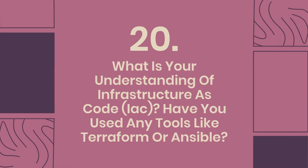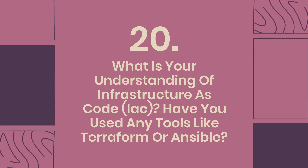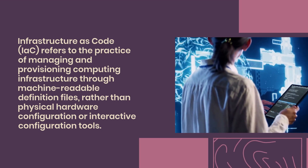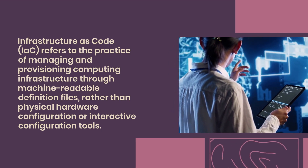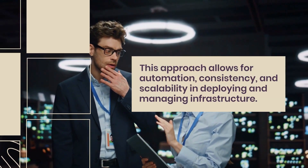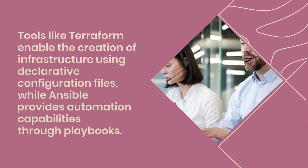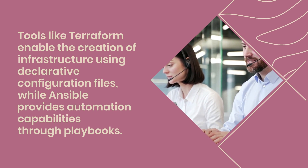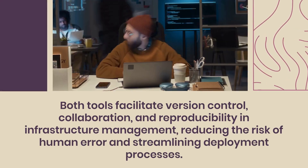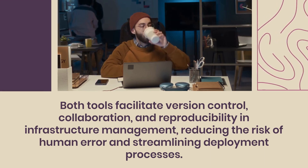Question 20: What is your understanding of Infrastructure as Code, IaC? Have you used any tools like Terraform or Ansible? Infrastructure as Code, IaC, refers to the practice of managing and provisioning computing infrastructure through machine-readable definition files, rather than physical hardware configuration or interactive configuration tools. This approach allows for automation, consistency, and scalability in deploying and managing infrastructure. Tools like Terraform enable the creation of infrastructure using declarative configuration files, while Ansible provides automation capabilities through playbooks. Both tools facilitate version control, collaboration, and reproducibility in infrastructure management, reducing the risk of human error and streamlining deployment processes.